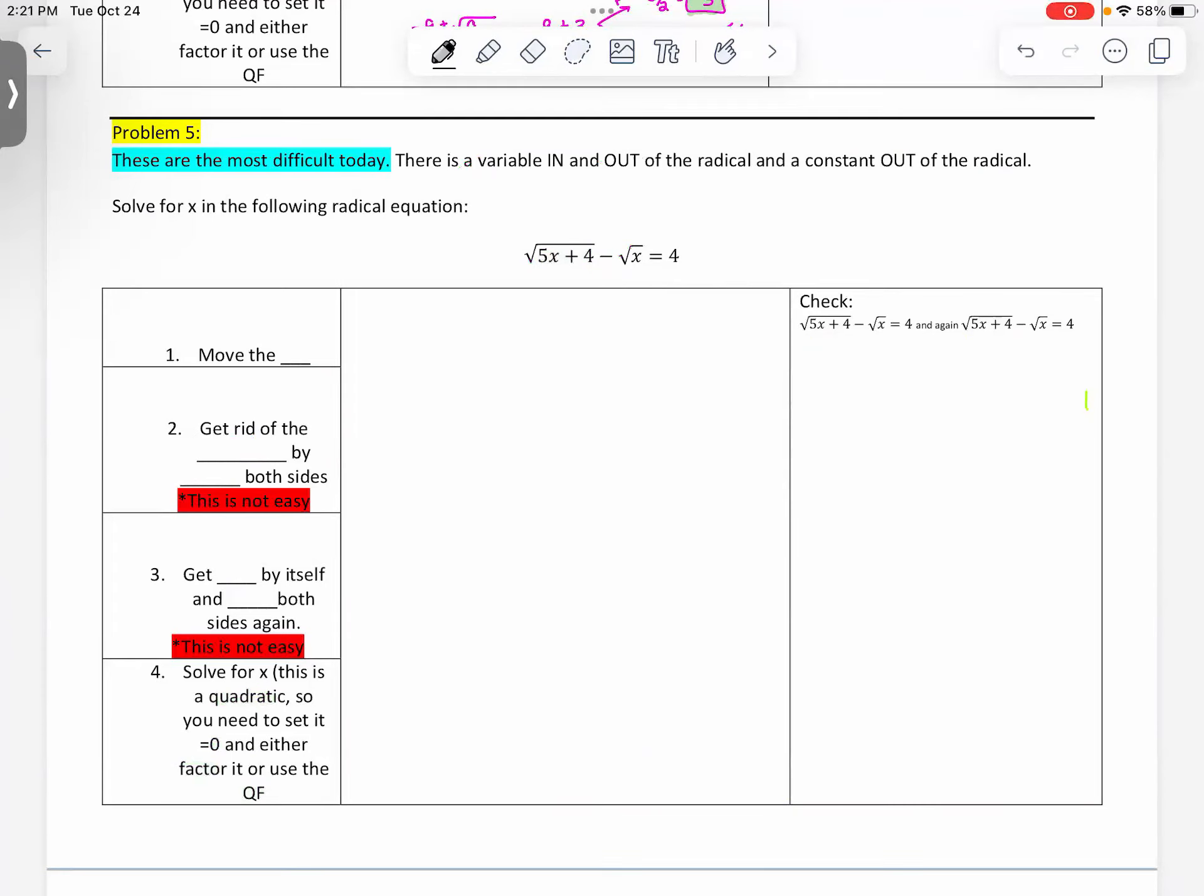Problem five is by far the most difficult problem that you're going to encounter in section five. There's going to be a variable inside. There's actually going to be two variables and they're both going to be inside. And you're also going to have a constant outside of the radical. So you can see your variables inside on a double radical and the constant in the back.